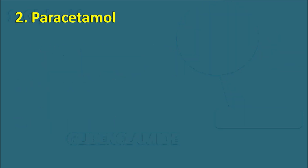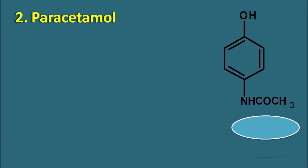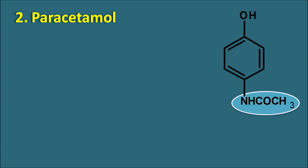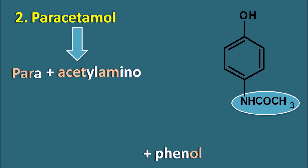The second one is paracetamol. Paracetamol is one of the widely known drugs used as an analgesic as well as antipyretic. Its structure has the acetamide — otherwise called acetylamino — group attached to the para portion of the phenol ring system. So we can consider paracetamol as para plus acetylamino plus phenol, that is para-acetylamino phenol, and from this the paracetamol name is derived.